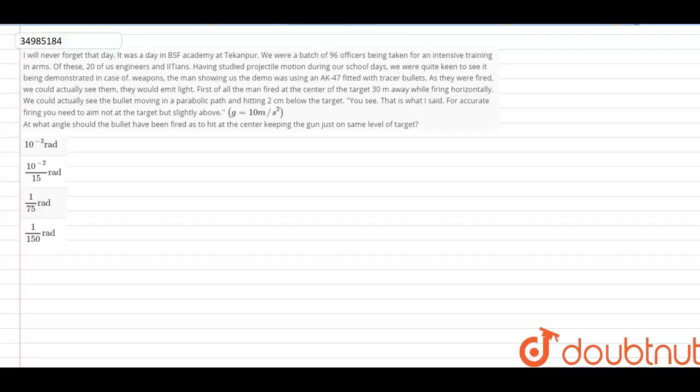The man in the demo was using an AK-47 fitted with tracer bullets. As they were fired, we could actually see them, they would emit light. First of all, the man fired at the center of the target 30 meters away while firing horizontally. We could actually see the bullet moving in a parabolic path and hit 2 cm below the target. You see, that is what I said, for accurate firing, you need to aim not at the target but slightly above.